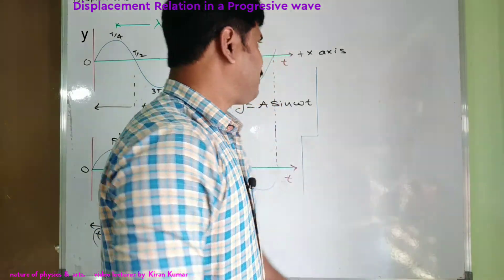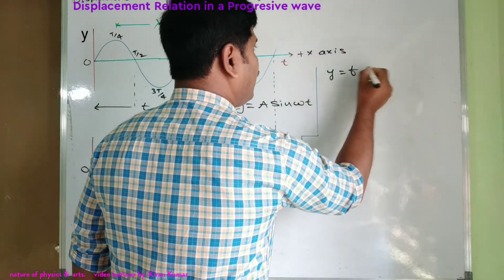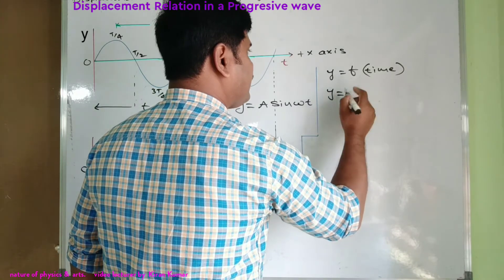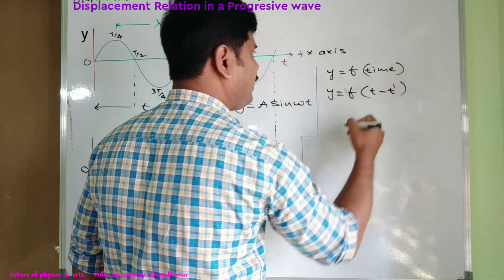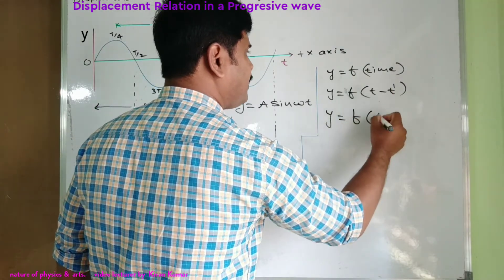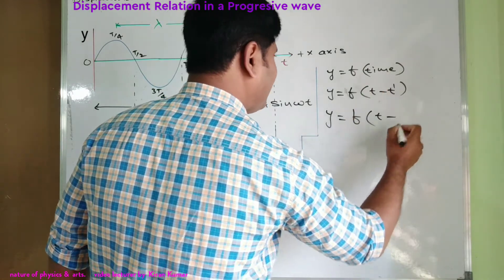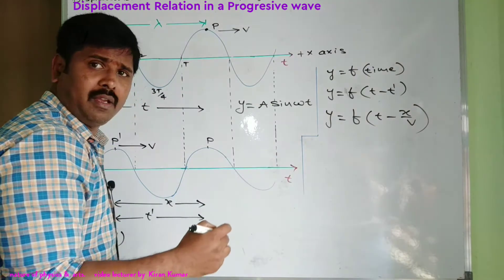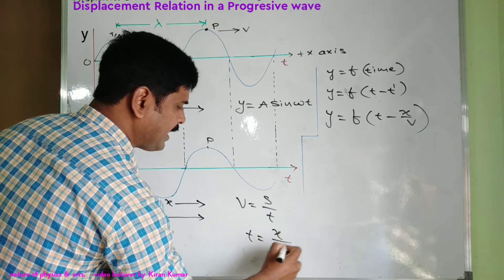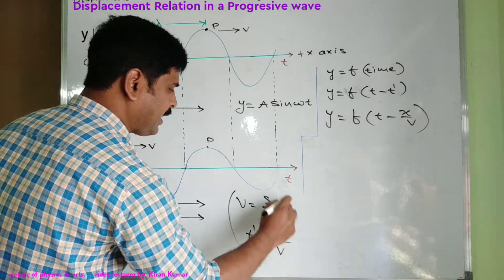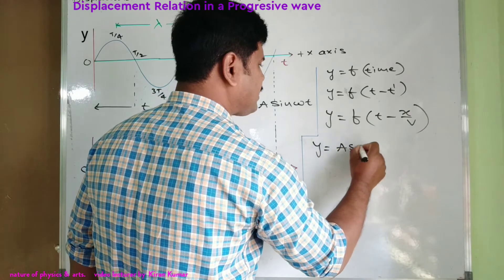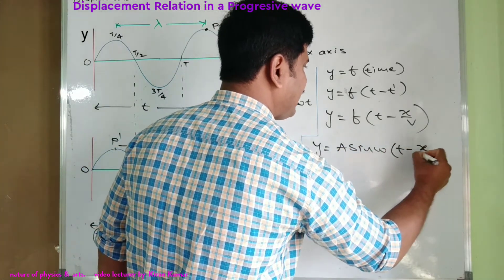The time from the origin to p-dash position is t minus t-dash, because the total time from origin to p is t, and from p-dash to p is t-dash, so the remaining time between O and p-dash is t minus t-dash. Here displacement is a function of time: y = f(t - t-dash). Since velocity equals displacement by time, t-dash equals x divided by v.